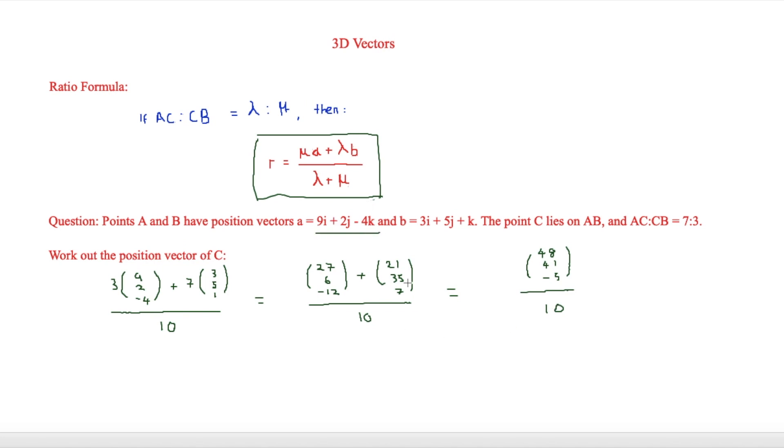Now we're going to go and put it back into this form here. So first of all, we've got 48i divided by 10, so that means that that's going to be 4.8i. Now looking at j, we have 41j divided by 10, so that's going to be plus 4.1j. And then finally, for k, we have minus 5 divided by 10. So therefore, we're going to have minus 0.5k. That is therefore equal to the position vector of c.